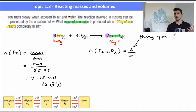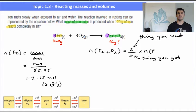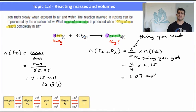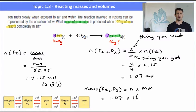So our ratio: the thing that you want — 2, iron oxide — over 4, the thing that you've been given, multiplied by the number of moles of the thing that we know, which is iron. So we have 2 over 4, which is a half, times 2.15, which gives us 1.07 moles of iron oxide. To work out the mass of Fe2O3, we use the formula: mass equals moles times molar mass. So 1.07 multiplied by the molar mass of Fe2O3, which is 159.7, gives us the mass of iron oxide: 172 grams.